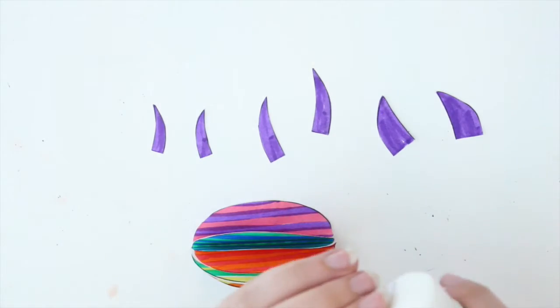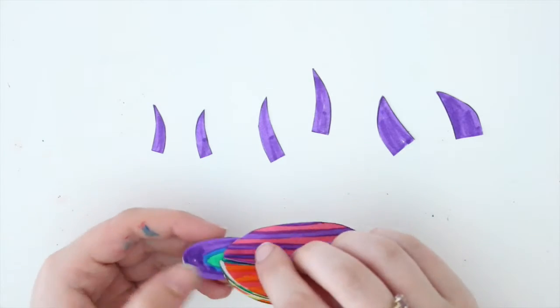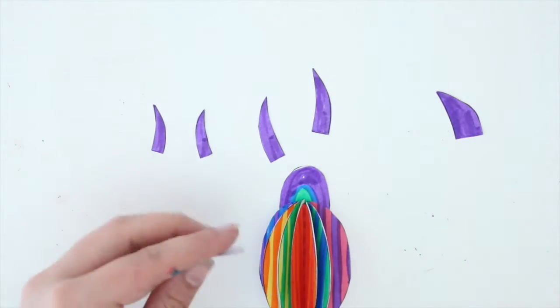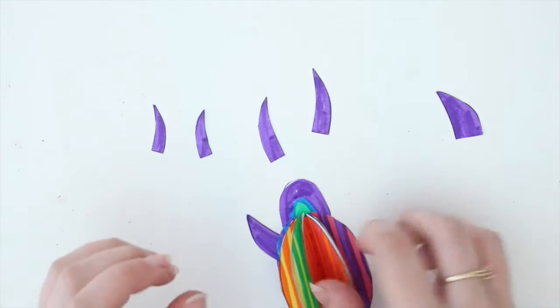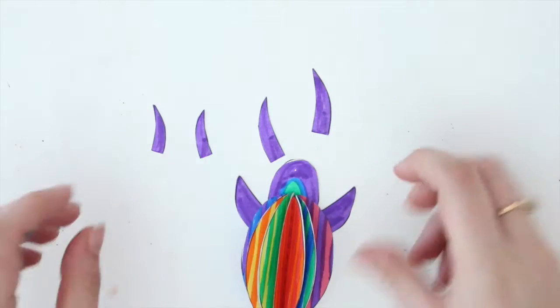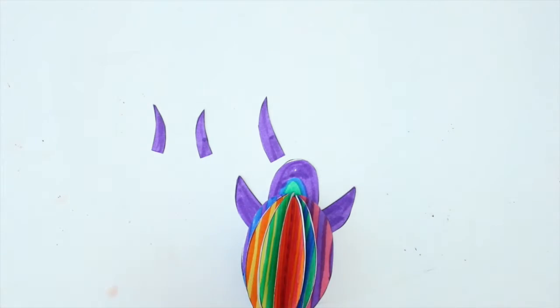Next, grab all of your colored beetle parts and glue them to the body. I glued the head first, and then I chose to put the short stubby legs up by his head as his arms. Then I decided that I wanted the longest legs on the bottom so he could walk around.